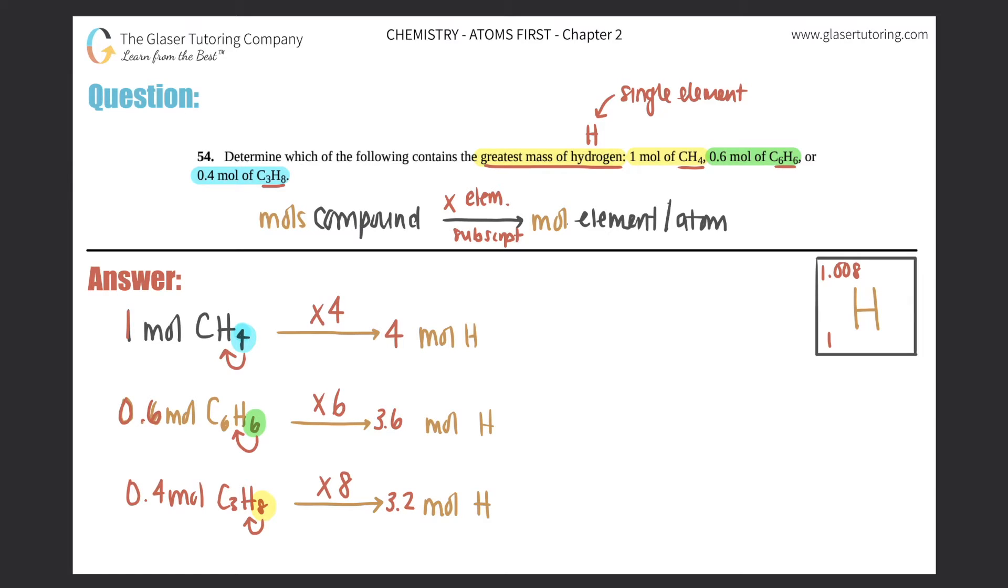Now, we should be able to get the answer from here because the reasoning is the greater the moles, the greater the mass. And you could only make this assumption if you're comparing the same thing. So X, the X could be either an element or a compound. But if you have more moles of something, so for example, if you had more moles of hydrogen, they're all hydrogen, the greater the mass. So in this case, since there's four moles of hydrogen, I know that this is going to be the answer. One mole of CH4 would be the one that contains the greatest mass of hydrogen.